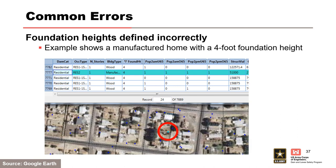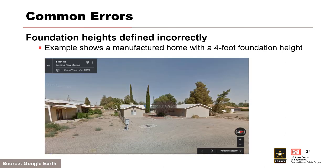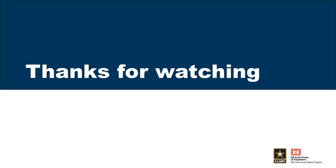Last one: foundation heights. A manufactured home shows a four-foot foundation height in the NSI. Going to street view, the foundation height does not look like four feet — it looks slab on grade. Make the adjustment. All of a sudden your damages and potential life loss of that structure can skyrocket, because they no longer have that four-foot buffer for vertical evacuation. These are all things to look out for in a structure inventory.